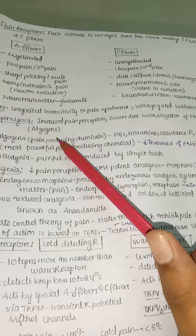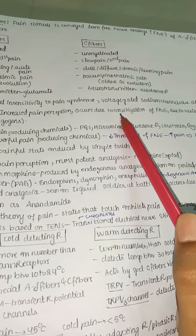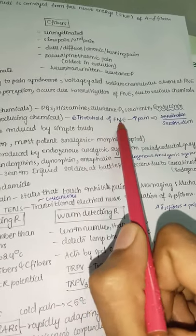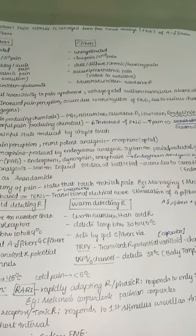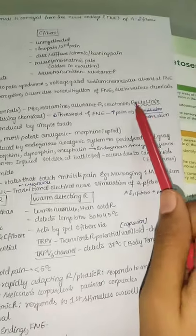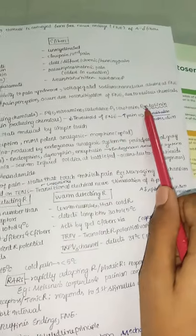Hyperalgesia is increased pain perception mainly due to algogens — pain-producing chemicals. It occurs due to sensitization of free nerve endings. Algogens include prostaglandins, histamine, substance P, serotonin, and bradykinin. Among all, bradykinin is the most potent pain producer.